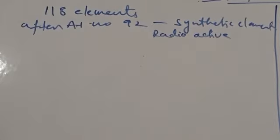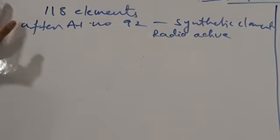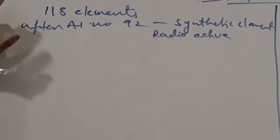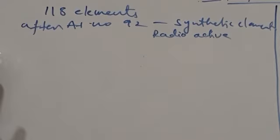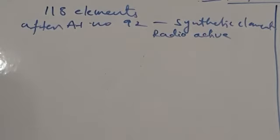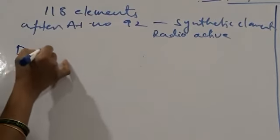The very first classification of elements was done by Dobereiner. Dobereiner arranged a set of three elements in the increasing order of their atomic weight. The basis for this classification is atomic weight. He arranged three elements, and a set of three elements is called a triad. Coming to Dobereiner triads.